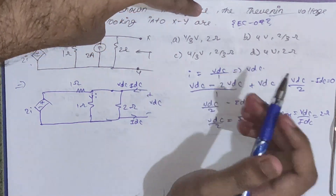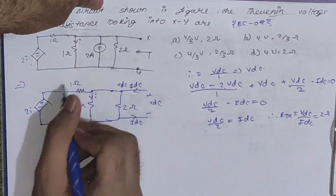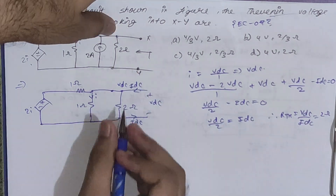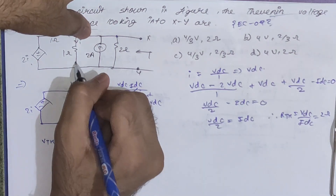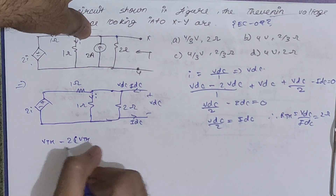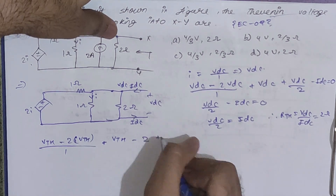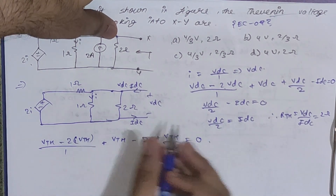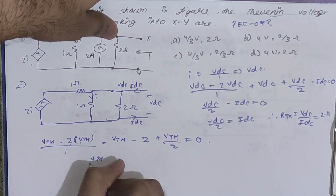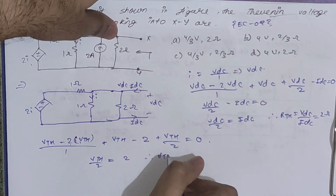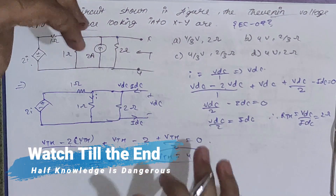From the options, A and D could be correct, but we also need Vth. Applying KCL to the original circuit (without replacing sources): (Vdc − 2I)/1 + Vdc/1 − 2 + Vdc/2 = 0, giving Vdc/2 = 2, so Vdc = 4 V. Following this trick, you can solve such problems very easily.